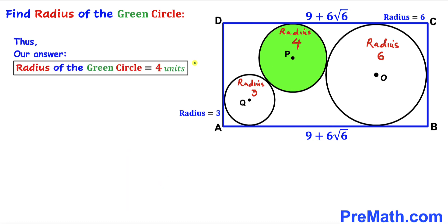The radius of the green circle turns out to be 4 units. Thanks for watching, and please don't forget to subscribe to my channel for more exciting videos.